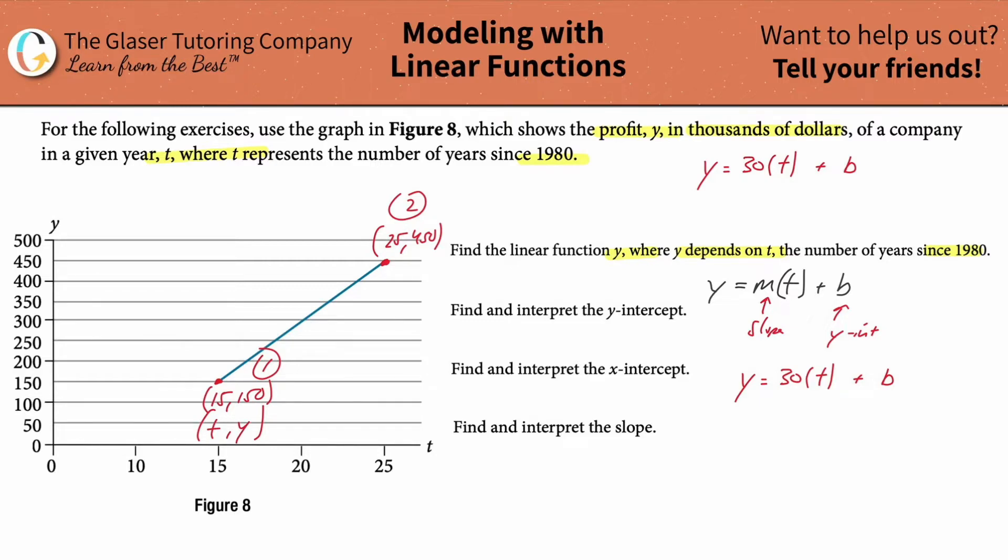So what I realize is that if I use this point, I know a T value, I know a Y value. I can plug them then on in to the formula. So Y is going to be equal to 150. This is now 30 times the time of 15, and then that's going to be now plus B.